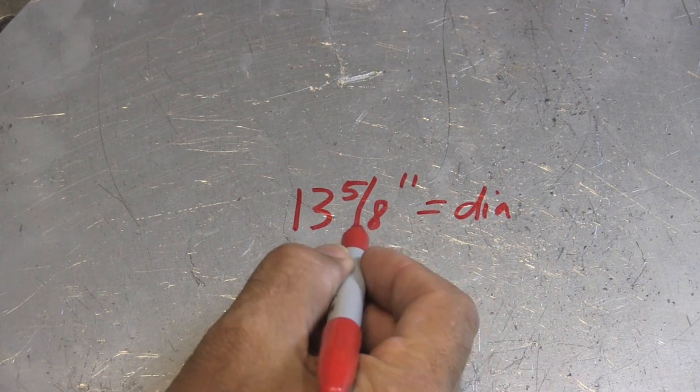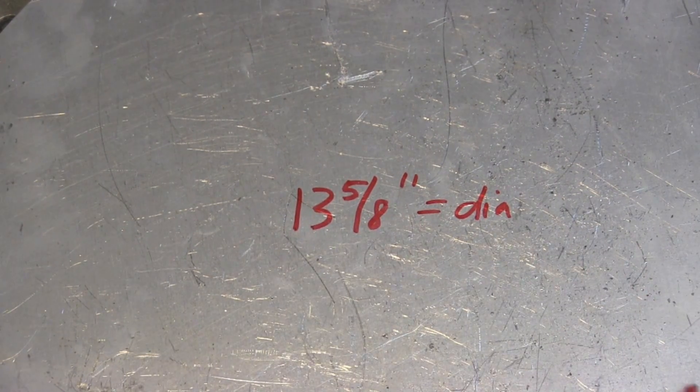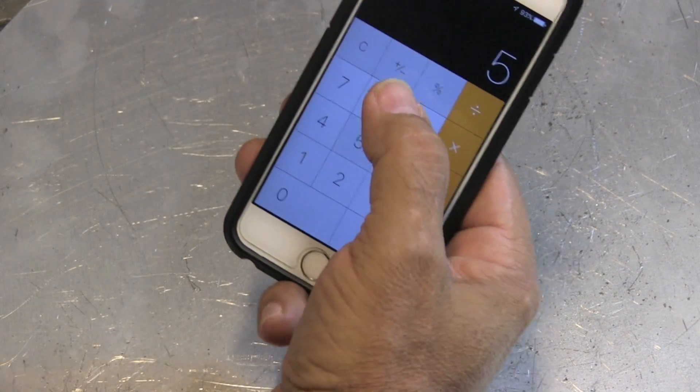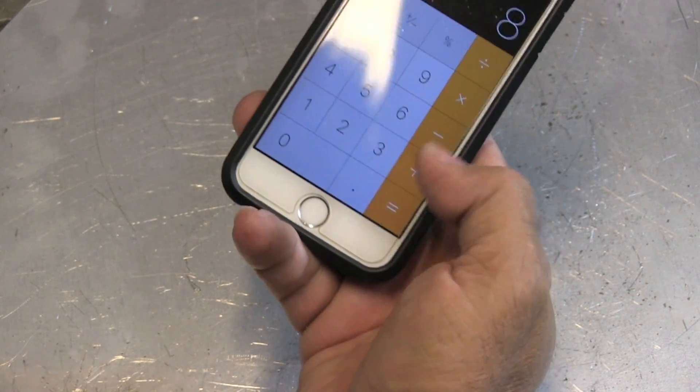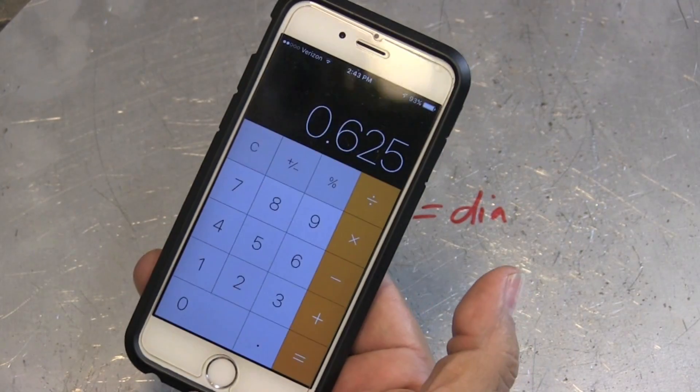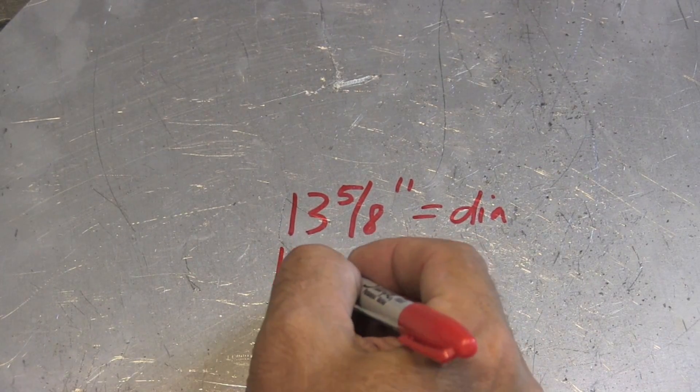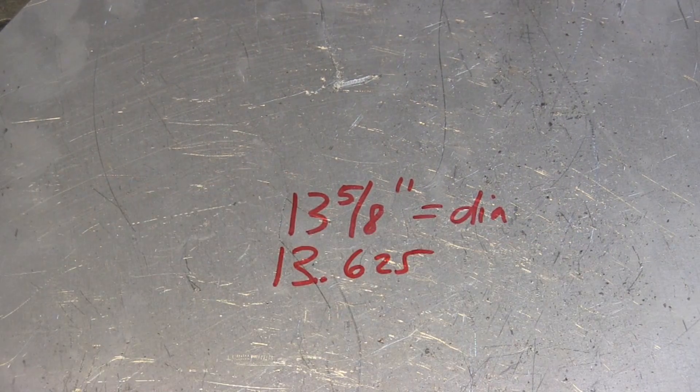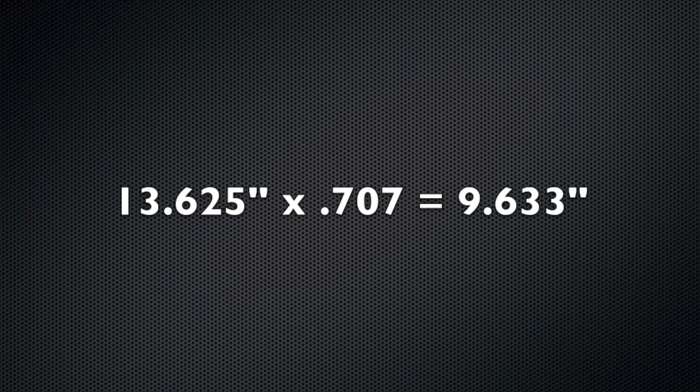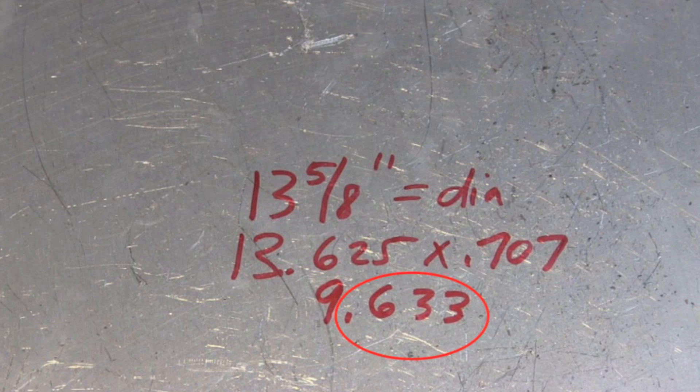I need to go to a decimal here instead of 5 eighths for this to work out. So 5 divided by 8 equals 0.625, which is 13.625. So 13.625 times 0.707 equals 9.633 inches.